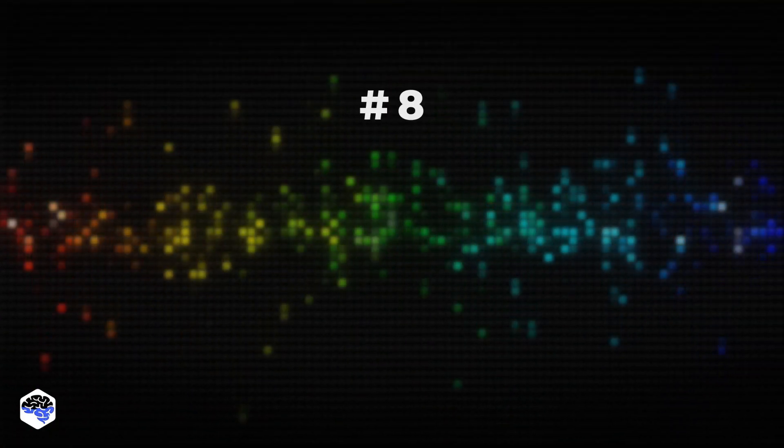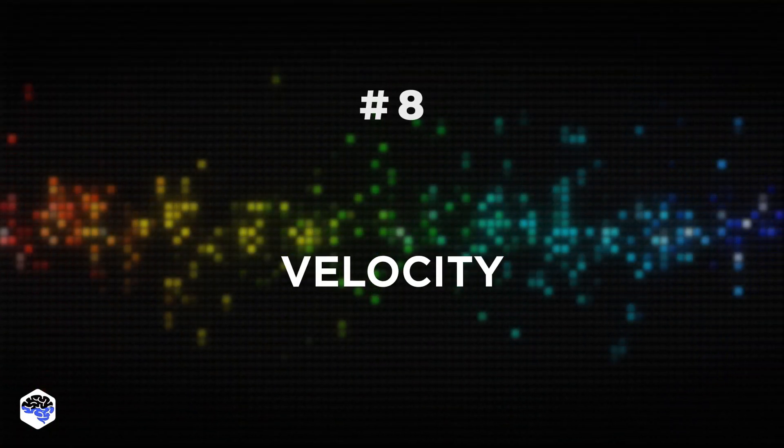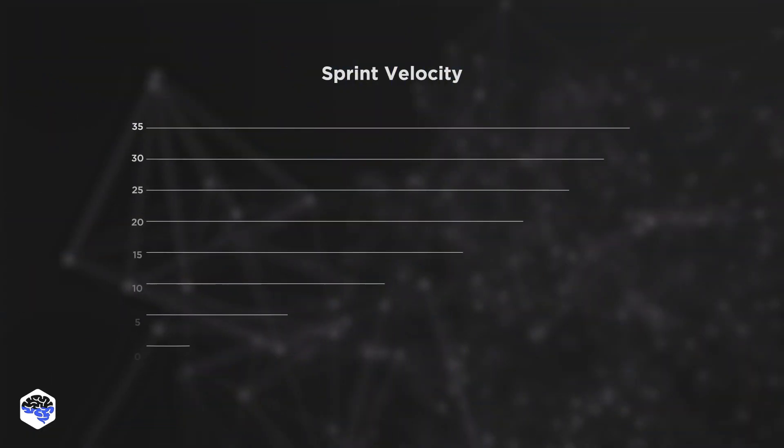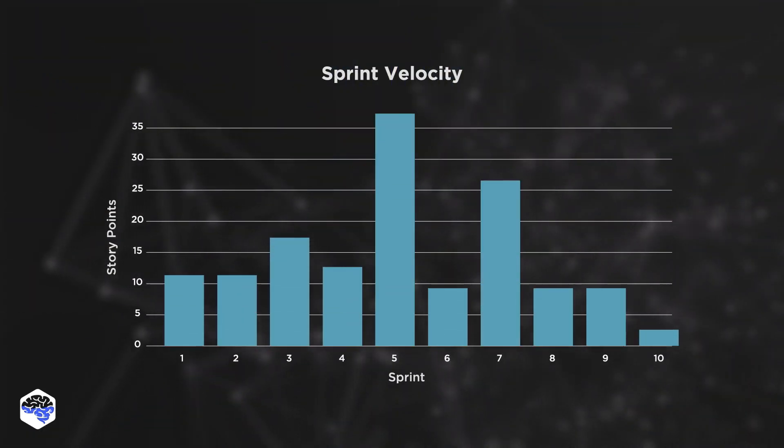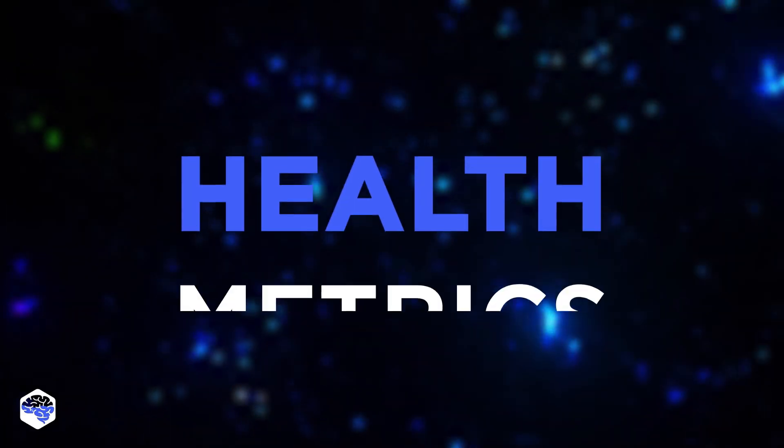Finally, we need to mention velocity. This metric evaluates the number of completed story points over a particular period. Based on your history, you can foresee time expenses for future story points. A decrease in the team's velocity can point to misunderstandings among team members or indicate tasks that are harder than previously anticipated.